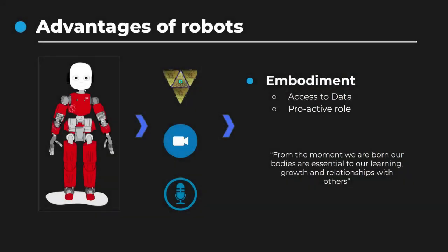Deep learning algorithms work well as long as the data they are trained on is representative of the final task. Robots, thanks to their different sensors such as cameras, microphones, and even tactile sensors, can acquire a huge amount of data which could be used to train those networks. Moreover, robots being physically present in the world can act and interact with the environment, giving variety in the data they can acquire, which is useful for deep learning approaches to generalize.